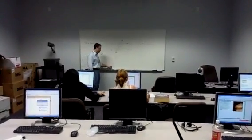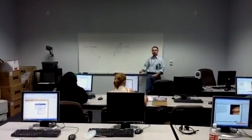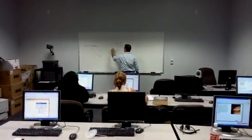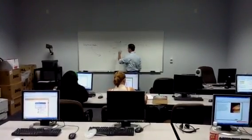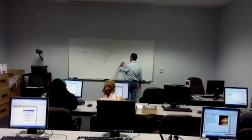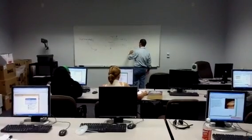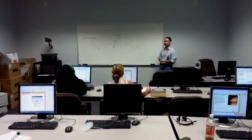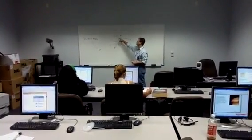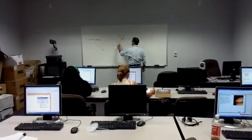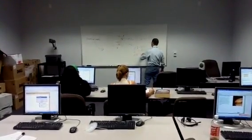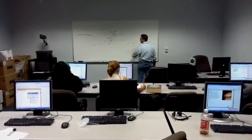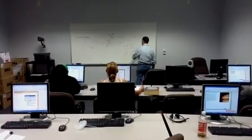When we have two parallel lines transversed by the same line, the corresponding angles are equal — so top left is going to equal top left. If angle one equals 100, then angle five is going to equal 100. With lines in parallel, the corresponding angles will be equal. Since angle one and angle five are equal, and angle one and angle three are equal, that means angle one equals angle three equals angle five equals angle seven. And the same goes for angle two equals angle four equals angle six equals angle eight.